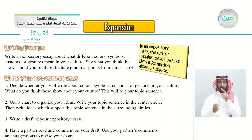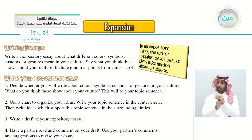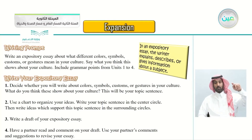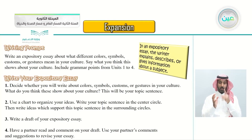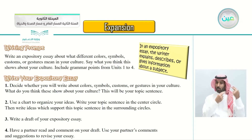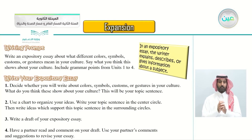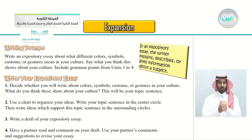Writing prompt: first, in an expository essay, the writer explains, describes, or gives information about a subject. The writing prompt is: write an expository essay about what different colors mean in our culture - different colors, different symbols. What do they mean in our culture? Customs and gestures also - say what you think this shows about your culture.